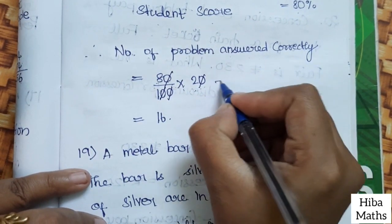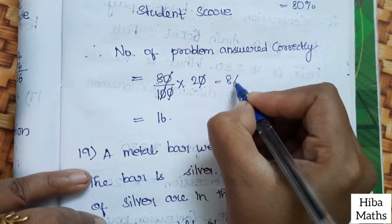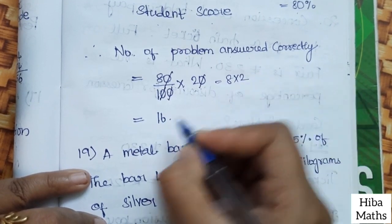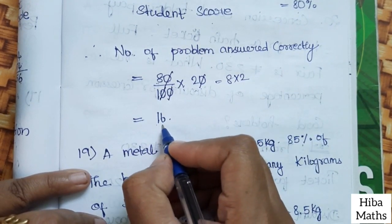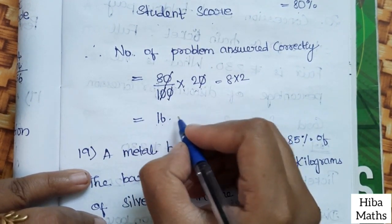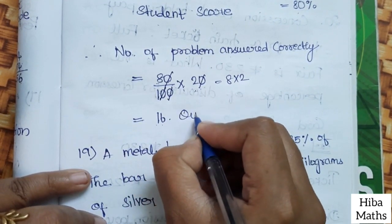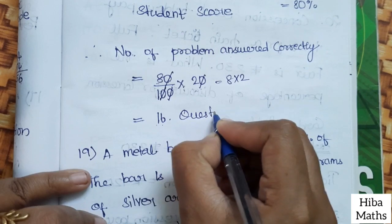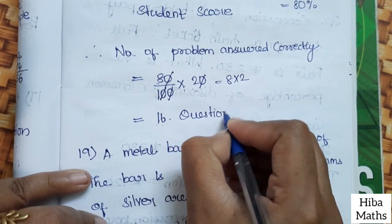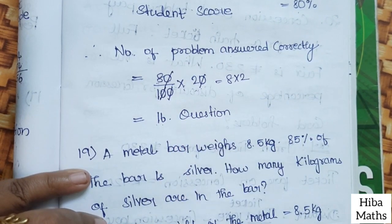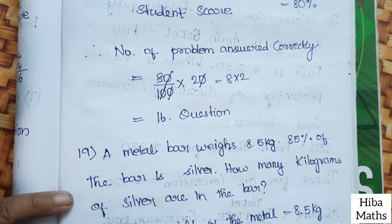8 times 2 is 16. So, 16 questions. How many problems did the student answer correctly? 16 questions. Thank you so much for watching.